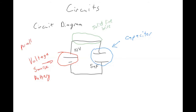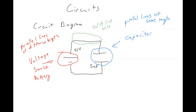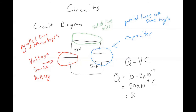So to summarize: parallel lines of different lengths is the battery; parallel lines of the same length is the capacitor. Given this circuit diagram with a 10 volt source and a 5 nanofarad capacitor, we can calculate the charge stored using Q = VC: 10 volts times 5 times 10 to the minus 9 farads equals 50 times 10 to the minus 9 coulombs, or 50 nanocoulombs.